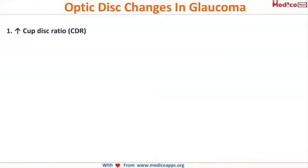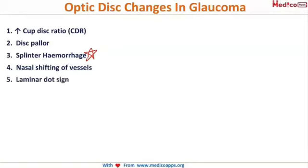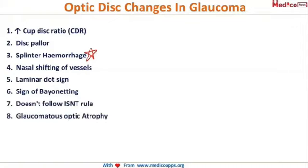Now let us see the changes in open-angle glaucoma. There are eight important features: increased cup-disc ratio, the healthy pink neuro-retinal rim becomes pale, characteristic splinter hemorrhage specific to glaucoma, nasal shifting of blood vessels, the lamina dot sign, the sign of bayonetting, break of the ISNT rule, and glaucomatous optic atrophy.